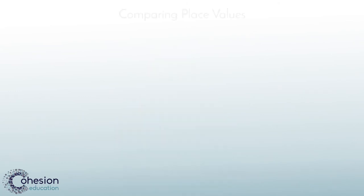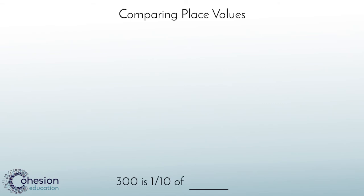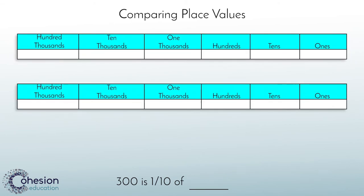In the last problem, we analyzed one number compared to all other place values. Another type of problem students may encounter is a fill-in-the-blank sentence to make true statements comparing place values. For example, to fill in this sentence: three hundred is one tenth of blank. It is important to remember our previous place value chart rules and rely on the chart for help. If you place three hundred in the chart under hundreds, we are looking for a number that three hundred is one tenth of. Since the number to the right is always one tenth of a certain number, we will look one to the left to get our answer: three thousand.